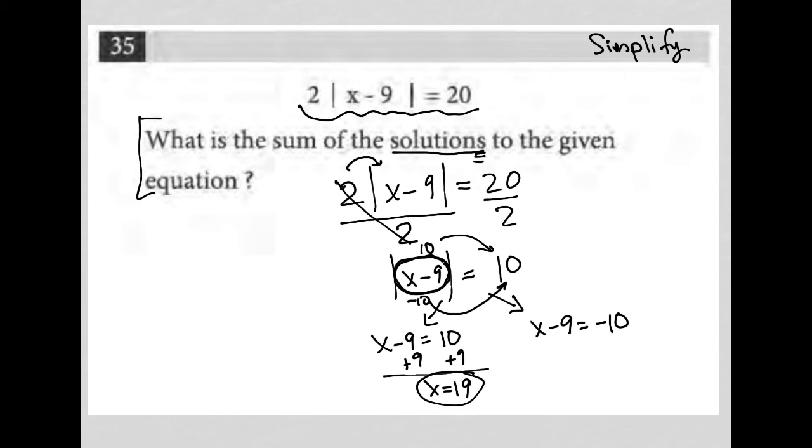So that is one x value that makes that equal to positive 10. But we can also find an x value that makes it equal to negative 10 because we know that will also work because the absolute value of negative 10 is also positive 10. So negative 10 plus 9 equals negative 1. So here is the other x value.